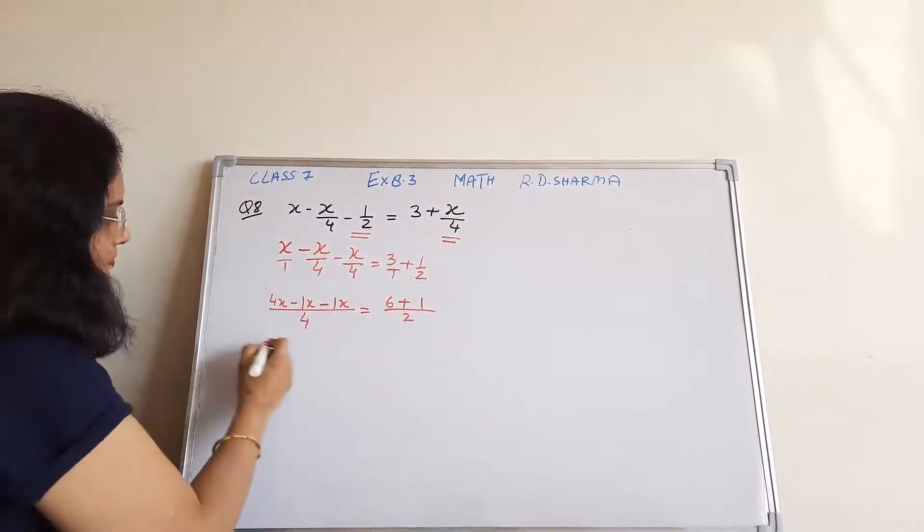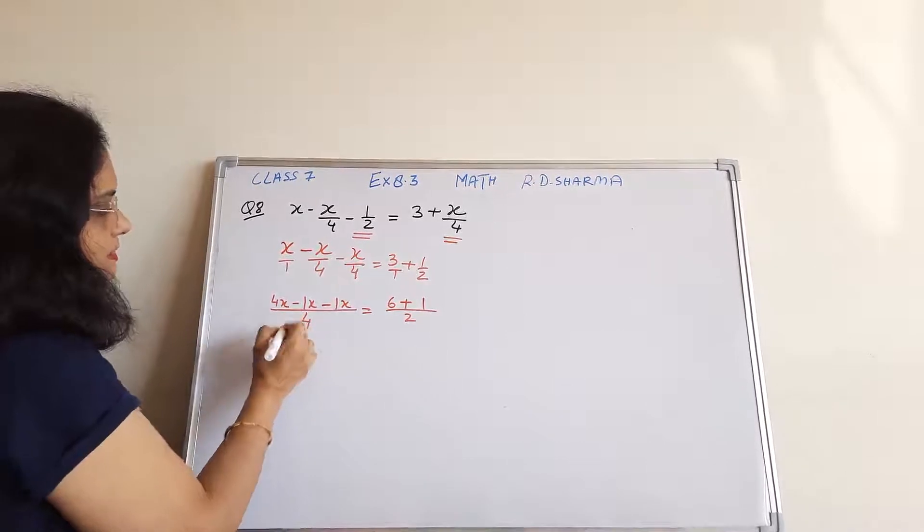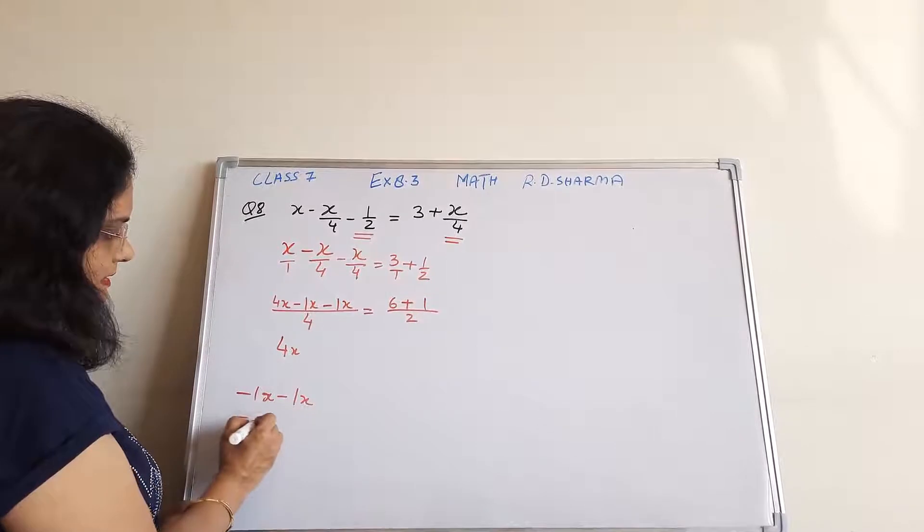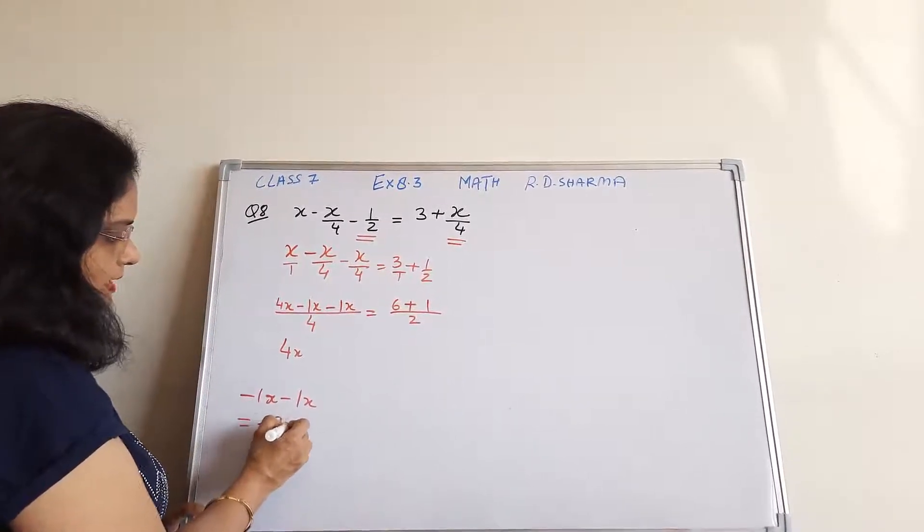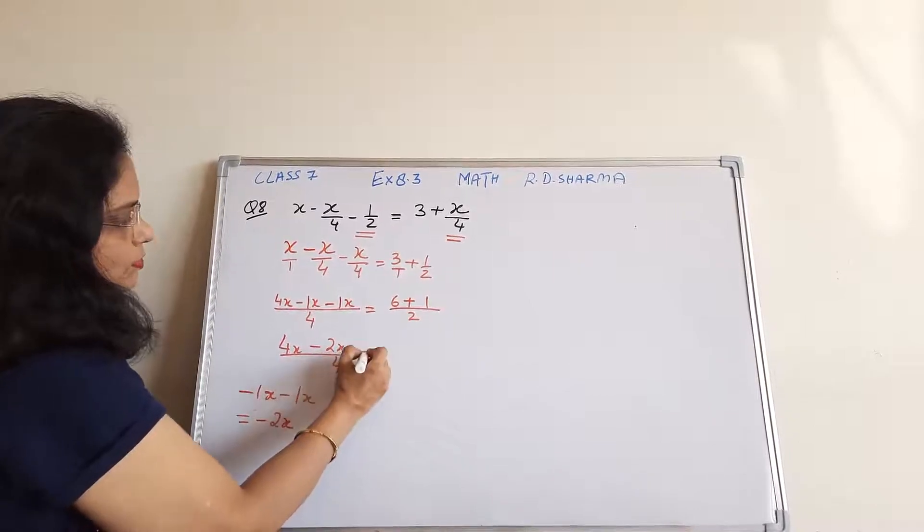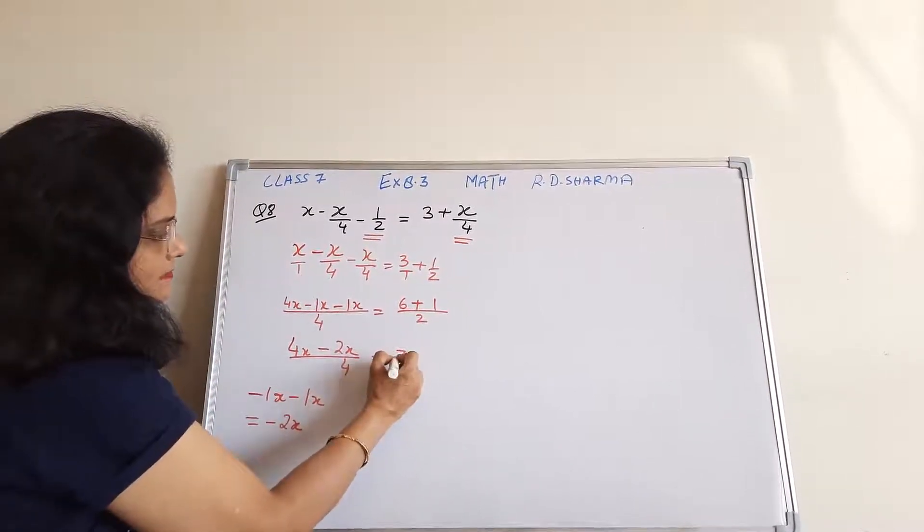So this becomes 4x minus 1x minus 1x, which becomes minus 2x upon 4 is equal to 6 plus 1 upon 2.